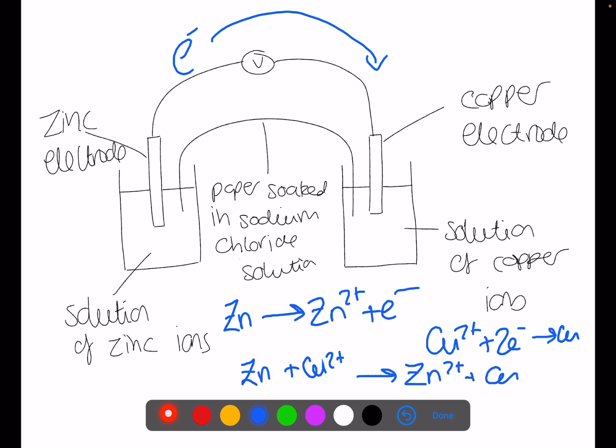The ion bridge is a piece of paper soaked in sodium chloride solution. This allows the counter ions in the solution of zinc ions and copper ions to move across the bridge. Let's have a look at this in practice.